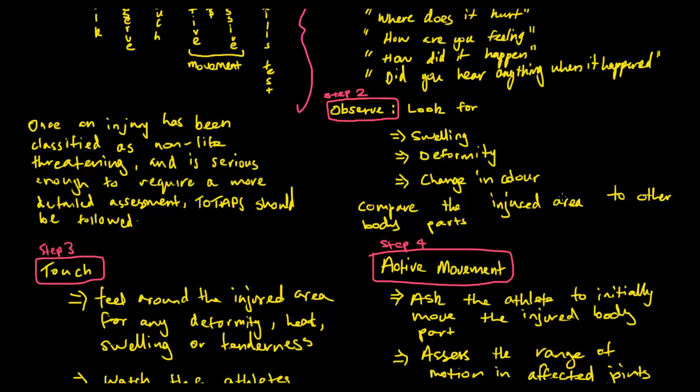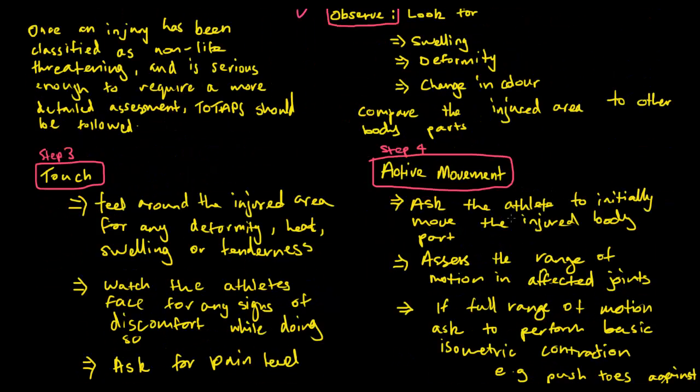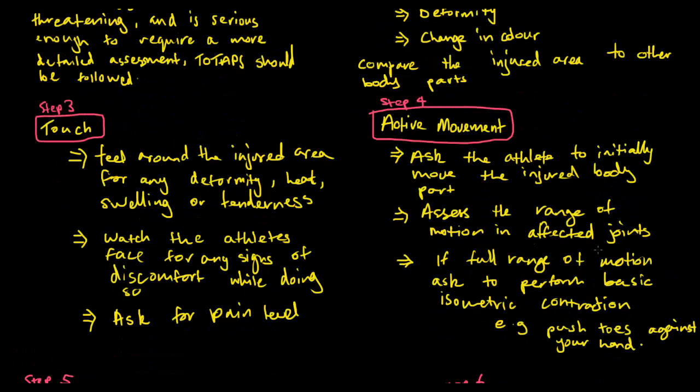Step 3 is all about feeling around the injured area. It's touch. This is the touch component of toe taps. We can feel around the injured area and we need to check for deformity, heat, swelling or tenderness. When we check for this, we just have to make sure that we look at the athlete's face and see any reactions when we're touching around the injury. By doing this, we can have a better feel of what the injury is, how severe the injury is and to what extent treatment is needed and whether or not the person is actually allowed back on field.